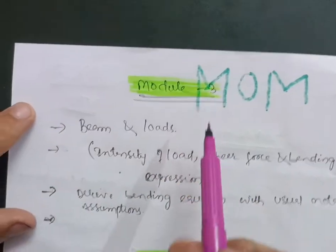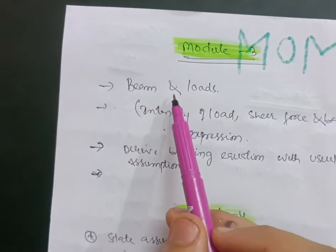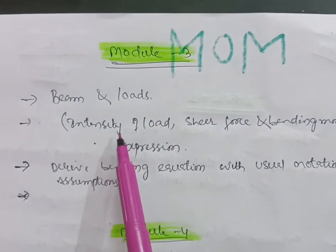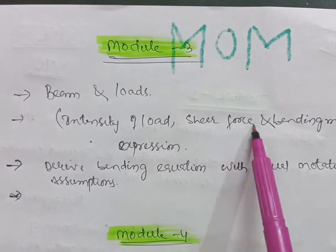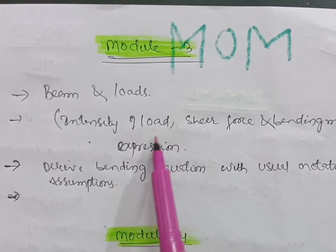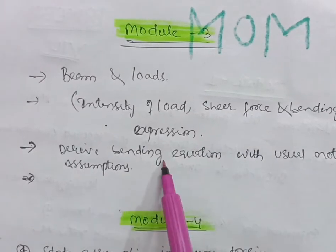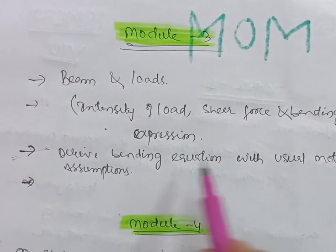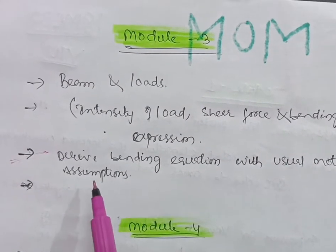In Module 3, there are definitions on beams and loads — know the differences between beam types and load types. Derive the relationship between intensity of load, shear force, and bending moment. Also derive the bending equation with usual notation — this is a definite question in this module. Write down the derivation along with its assumptions.